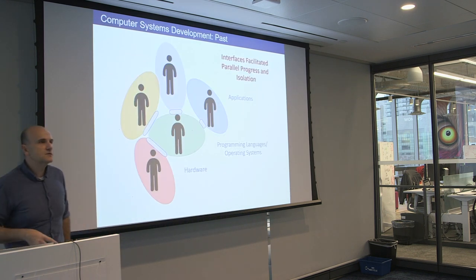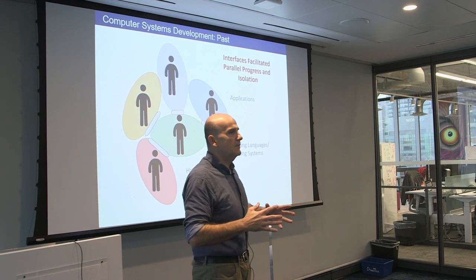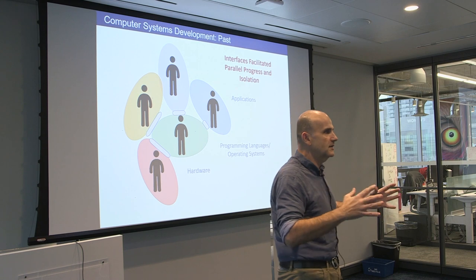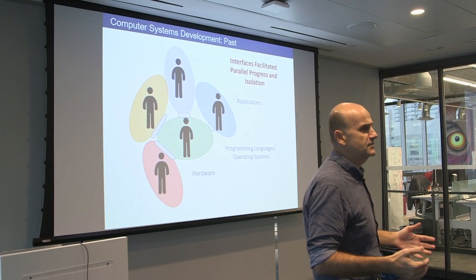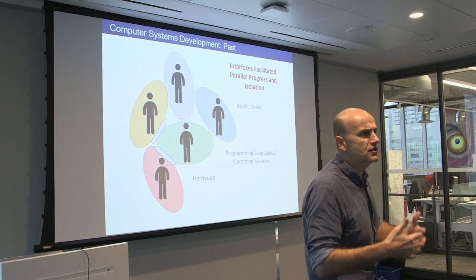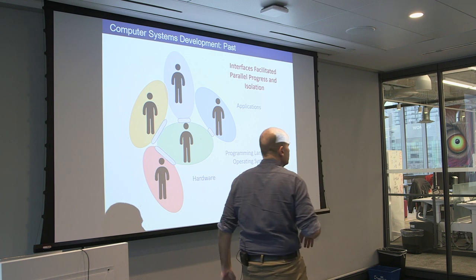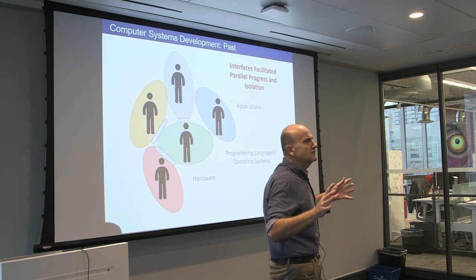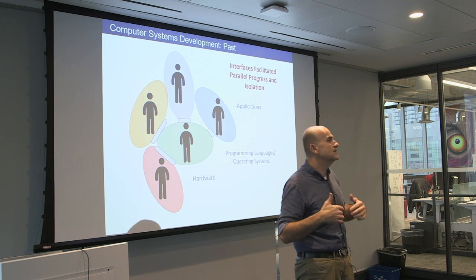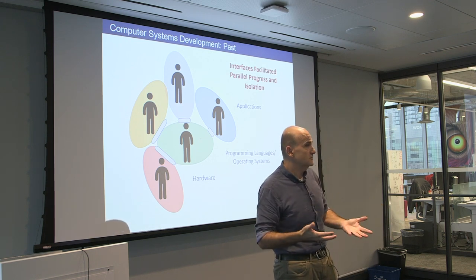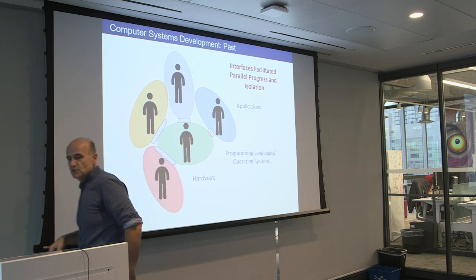Another thing that was happening in the decades past is that computer science really managed to isolate layers so that everybody could innovate pretty much in isolation. That was primarily about interfaces — at the hardware level it's the instruction set, the OS system calls, multiple levels of abstraction. You could do databases without necessarily knowing about hardware, and I could do hardware without necessarily understanding databases. Every two years you could get 2x, so that was fine.